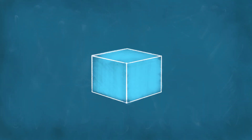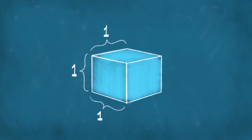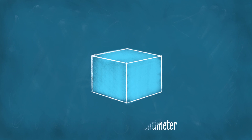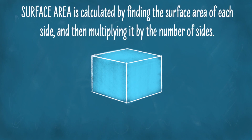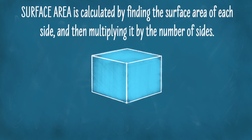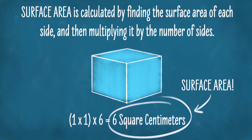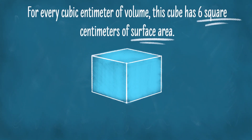Let's take a look at some cubes. This cube is one centimeter by one centimeter by one centimeter, so its volume is one cubed — one cubic centimeter. Its surface area is calculated by finding the surface area of each side and multiplying by the number of sides. Each side is one times one, or one square centimeter. There are six sides, so the total surface area is six square centimeters.